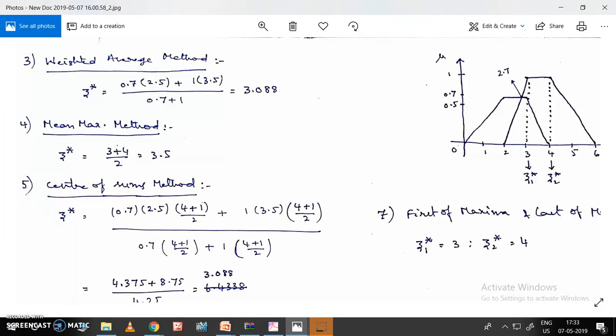So 1 times 3.5, whole divided by 0.7 plus 1, gives us z*.